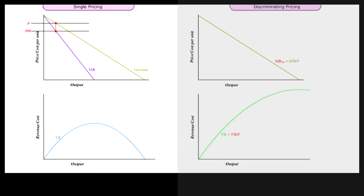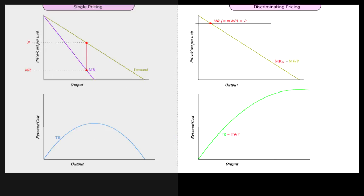Under single pricing, marginal revenue MR is less than price P because price must be lowered for all units in order to sell just one more unit. Under discriminating pricing, MR, that is MWP, is equal to price because each unit is sold at a different price.